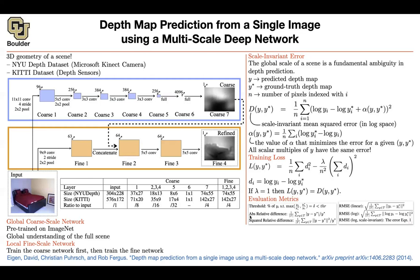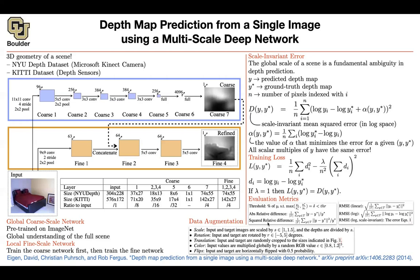In terms of other evaluation metrics, you can look at the threshold. You can look at absolute relative difference, squared relative differences, root mean squared error in the linear case. Or you take a log first and then write down your root mean squared error. Or you can write this scale invariant mean squared error. And we know that data augmentation is important. It is also important when you are doing depth estimation.